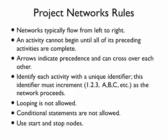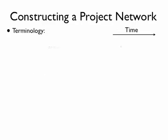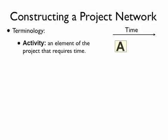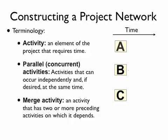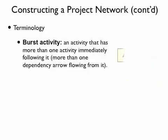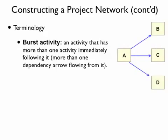A few key pieces of terminology: an activity is something that requires some amount of work or time. A parallel activity means two activities can occur independently and at the same time, with no dependency between them — A and B are an example. A merge activity is one where multiple predecessors must complete before it can start — activity D is a merge activity where A, B, and C must all be completed first. A burst activity is the opposite — activity A is a burst activity, being the predecessor for B, C, and D.